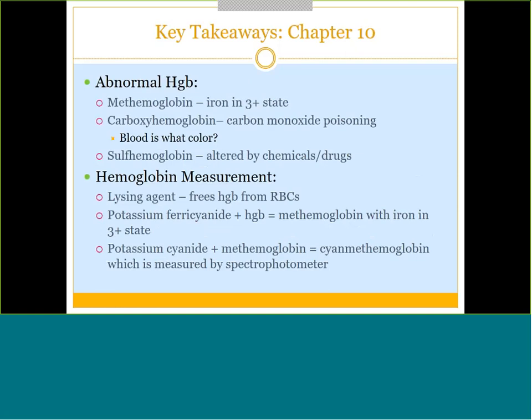In Chapter 10 we also learned there are abnormal types of hemoglobin. Methemoglobin is when the iron changes to be in the ferric three-plus state, and as a result it won't deliver oxygen properly. Carboxyhemoglobin is when you have carbon monoxide poisoning — if the hemoglobin molecule has a choice between carbon monoxide and oxygen, it will always pick carbon monoxide, so it never picks up oxygen, and the blood is a classic cherry-red color. Sulfhemoglobin is hemoglobin altered due to various chemicals or drugs.